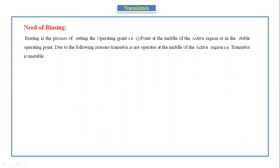Those who have not watched the DC load line video should watch that first to understand what the operating point is. The operating point should always be in the middle of the active region. If it is not operating at the middle, then the transistor is in an unstable condition. To stabilize the transistor we use biasing circuits.